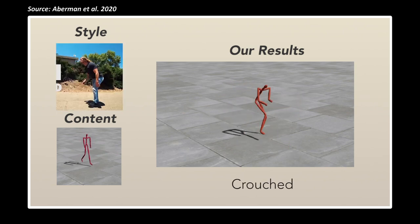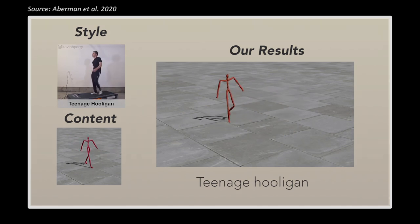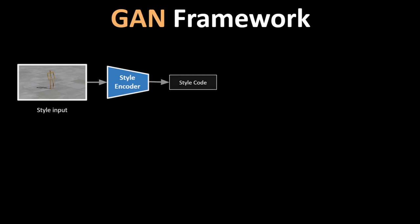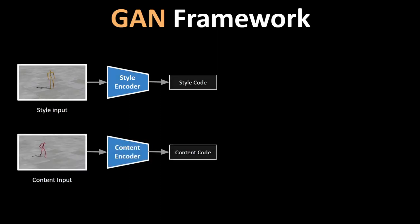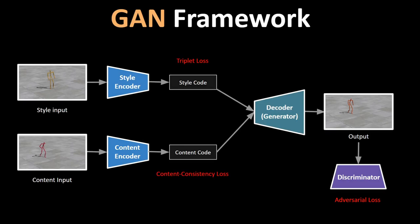This makes it very easy to programmatically add a specific personality to an animated character with almost no manual work required. They use a style encoder to extract the motion style from video and a separate content encoder from the 3D body points, which are then combined and fed into the generator. In addition to the adversarial loss of the GAN framework, they also use a triplet loss and a content consistency loss, which ensures that the generated output motion is smooth and natural-looking with temporal consistency.